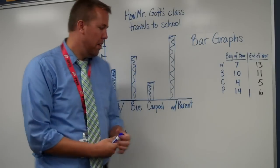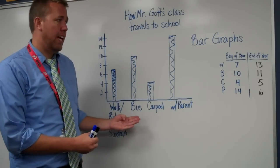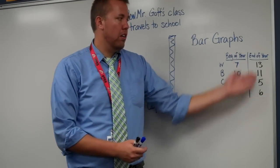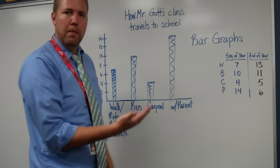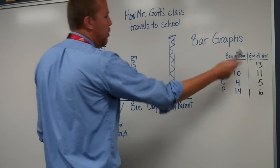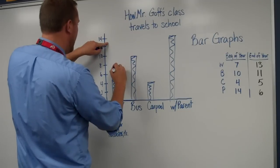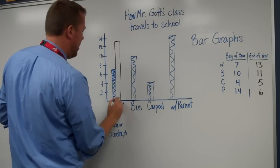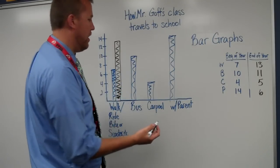If I want to do a double bar graph, I have the same data and the same questions, but I'm comparing two different times — such as beginning of year versus end of year. The end-of-year numbers are different, so I want to do that in a different color. Walking went from 7 to 13, so I'd come up to 13 and make a bar off of that, so we can compare the two.